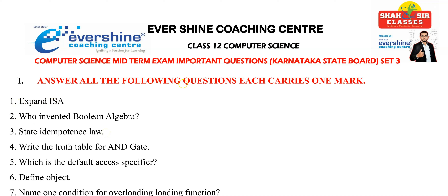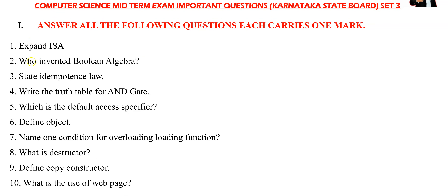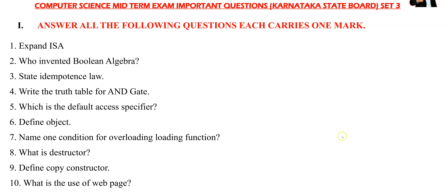Answer all the following questions — each carries one mark. You can see a set of questions: expand ISA, who invented Boolean algebra, state independence law, write the truth table for OR gate. They are asking you only to draw the truth table. Which is the default access specifier? Define object. Name one condition for overloading function. What is destructor? Define copy constructor. What is the use of a web page?